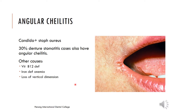Angular cheilitis is again a Candida-associated lesion; it can be caused by Candida as well as Staphylococcus aureus, which is in high abundance on the skin surface. 30% of denture stomatitis cases also have angular cheilitis. Reasons include vitamin deficiency, iron deficiency anemia, or simply loss of vertical dimension. In elderly patients who have lost their teeth, the arches collapse, causing drooling from the angles of the mouth, which leads to angular cheilitis.